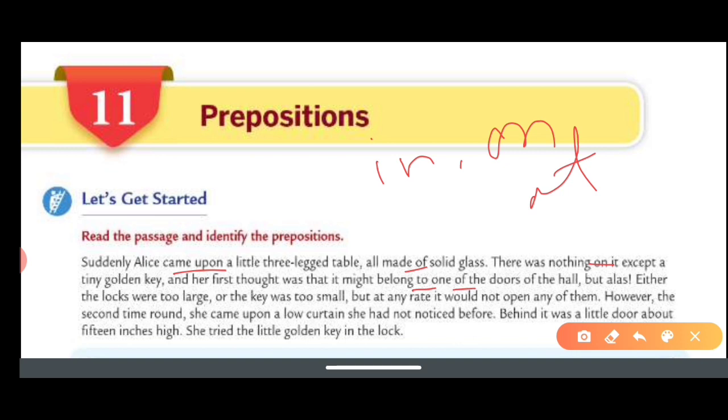Or the key was too small, but at any rate, at is your preposition. It would not open any of them. Of again is the preposition. However, the second time around, she came upon a low curtain she had not noticed before. Upon is a preposition. Behind it was a little door about 15 inches high. About is your preposition here. She tried the little golden key in the lock. In is your preposition, and around is your preposition here.